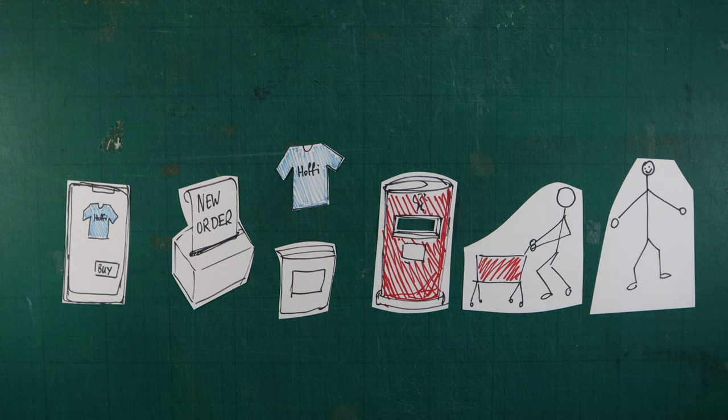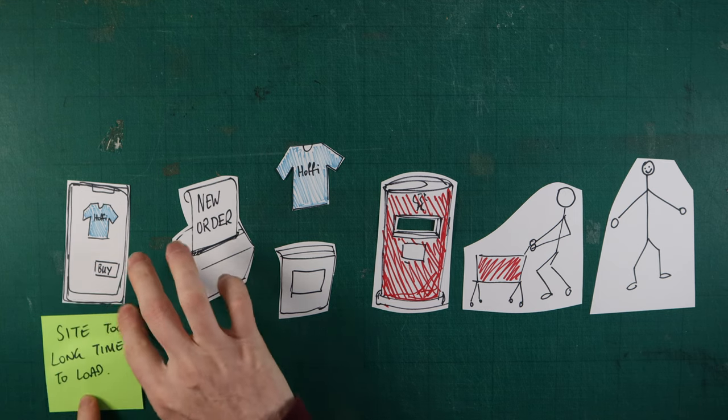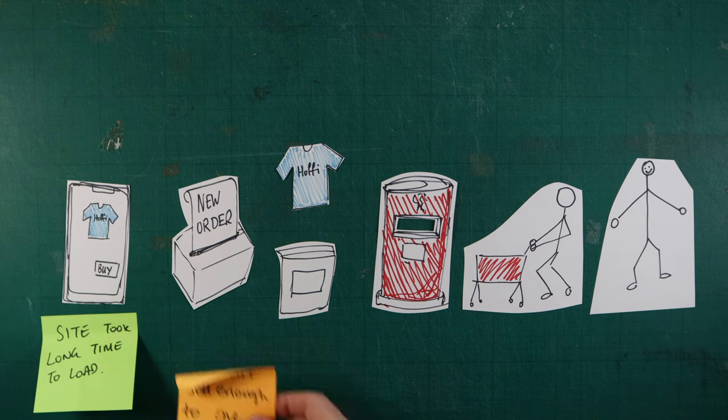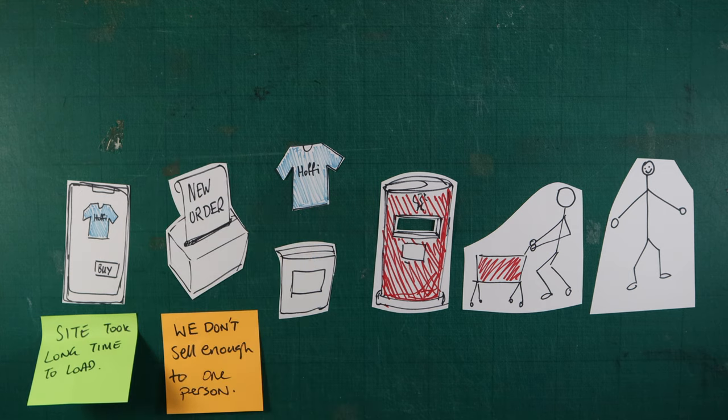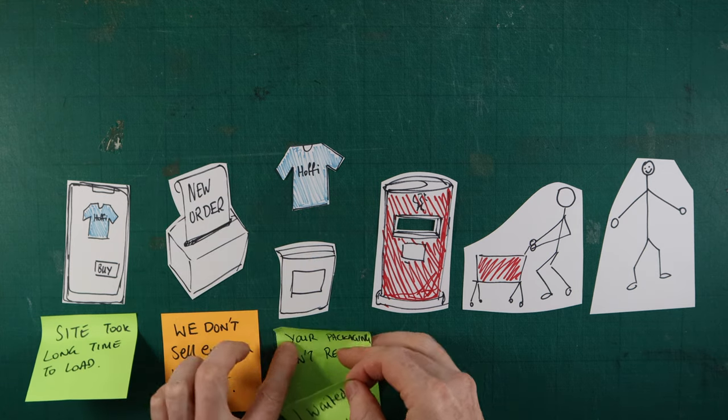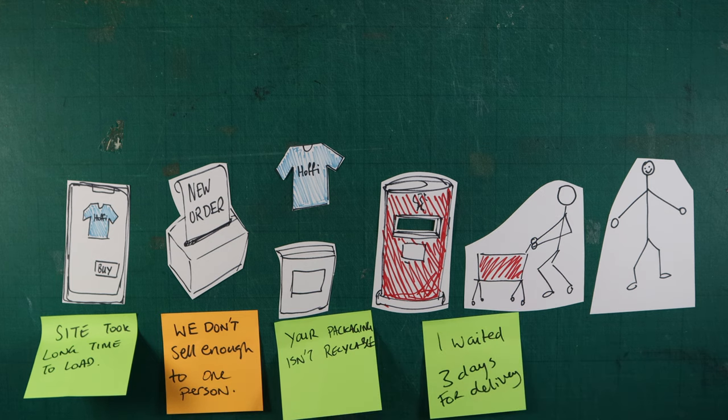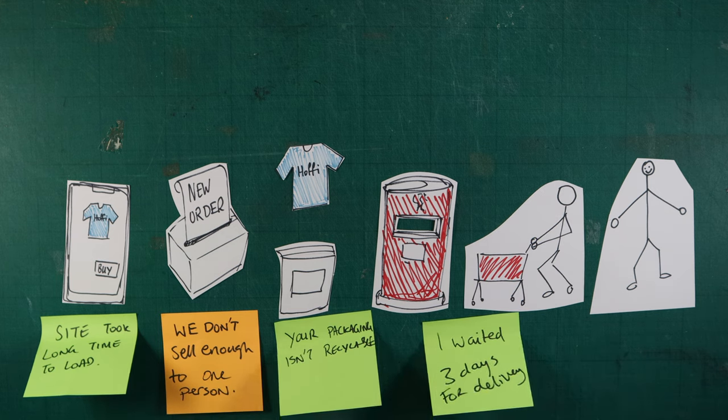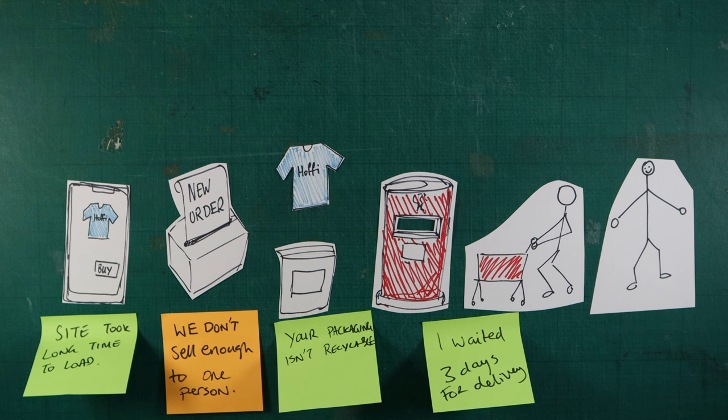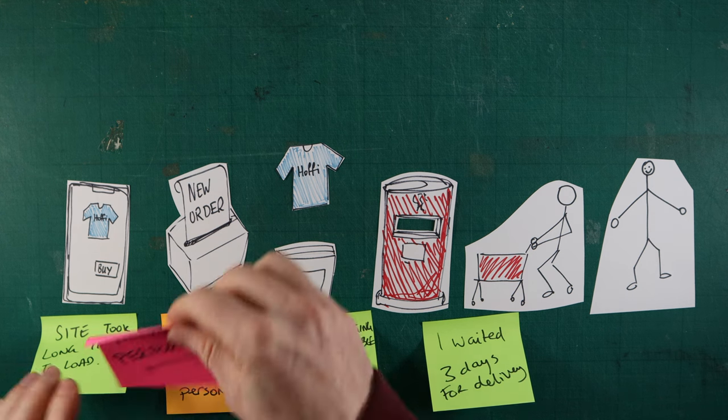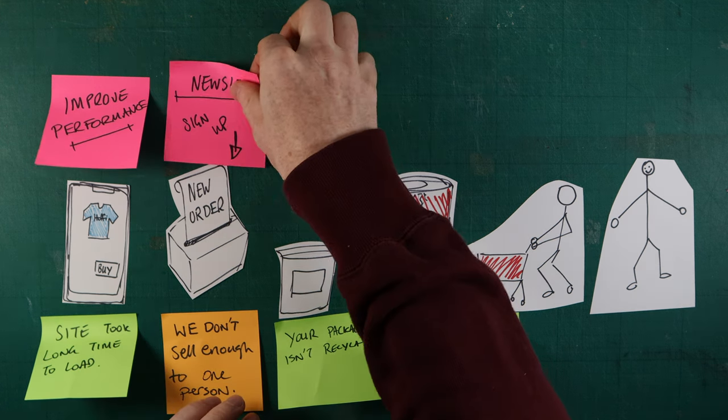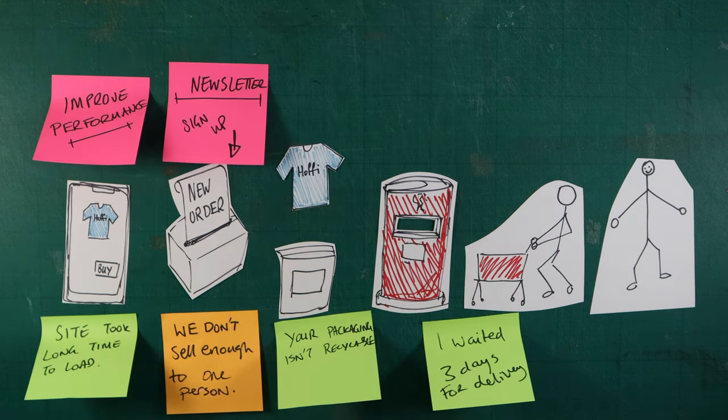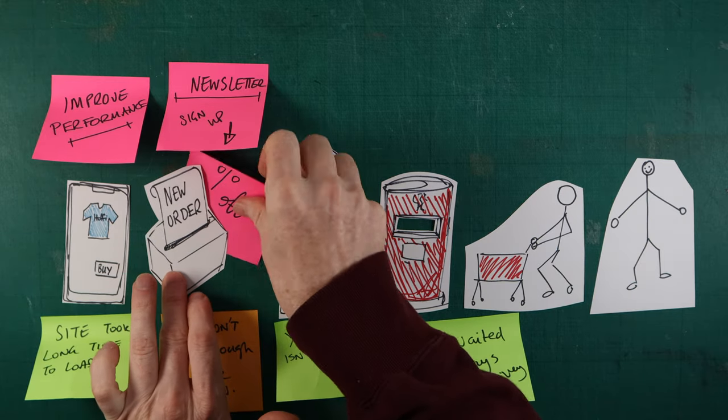From this initial research, the designer found the customer found the performance of the site to be an issue. They also felt the non-recyclable packaging did not align with the company's claim about being an ethical business. For the business itself, they needed to increase spend per customer. Finally, the customer wasn't happy with the three days they had to wait for delivery, commenting they can get most things next day these days. With these insights in mind, we can begin to explore and prototype ways to improve the customer's experience.